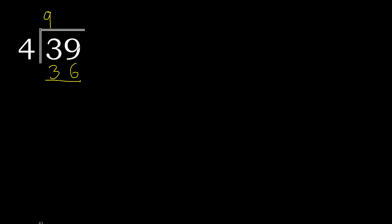39 minus 36 is 3. There is no number after, therefore complete. Always complete with 0, here with a point — 0.30.